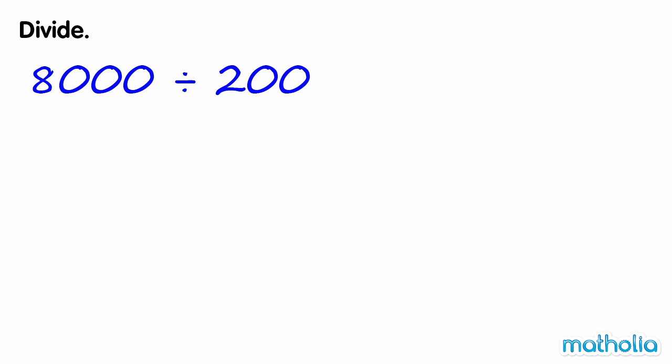Divide. Find 8000 divided by 200. Both 8000 and 200 are multiples of 100, so the zeros in the tens and ones place cancel.